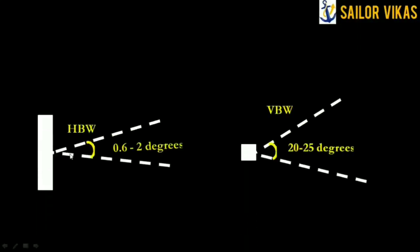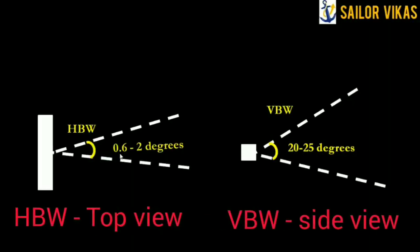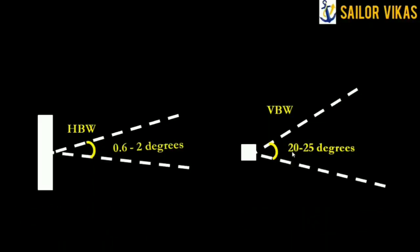Horizontal beam width, as viewed from the top, is an angle determined by the manufacturer. IMO states it should not be more than 2 degrees. Vertical beam width is typically 20 to 25 degrees, though it depends on the manufacturer, with one or two degrees variation possible.